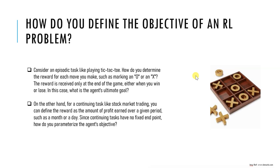The agent learns by updating its value for each state-action pair based on its experience. You define all the rewards: plus one for reaching the goal, minus one for losing, and no reward for drawing. You then create a mathematical expression that helps the agent achieve the horizontal, vertical, and diagonal win conditions.